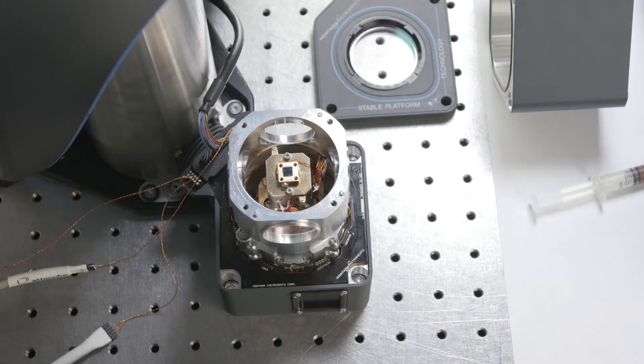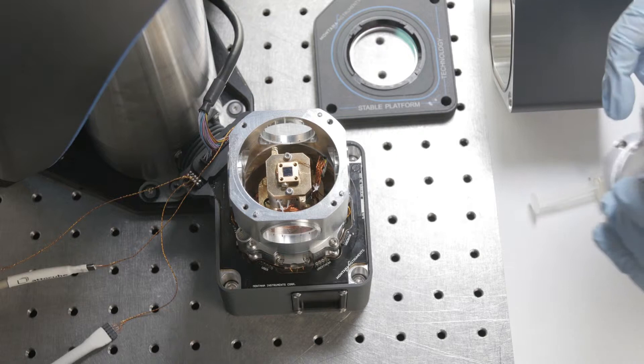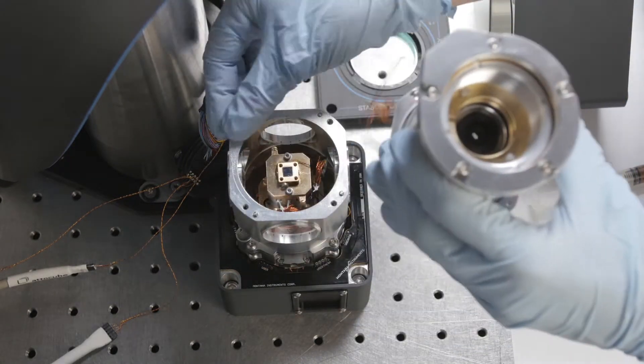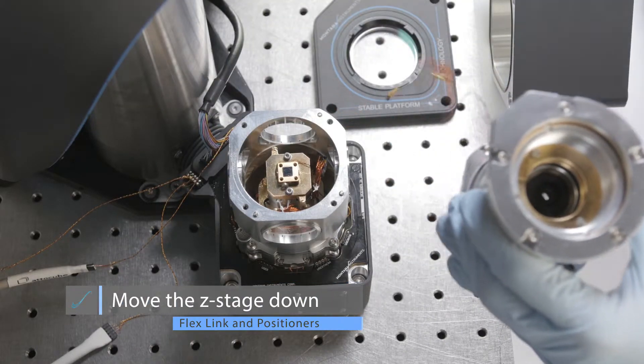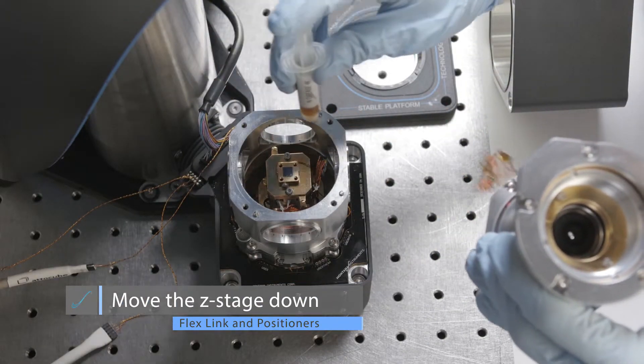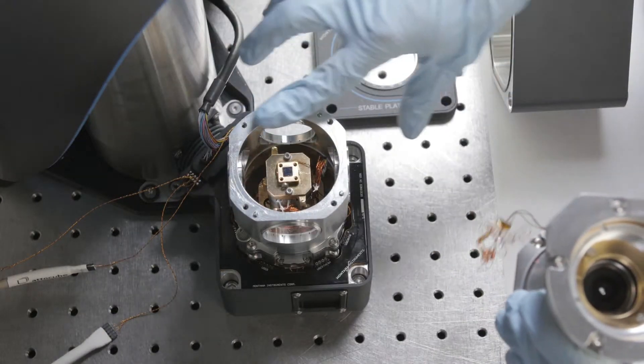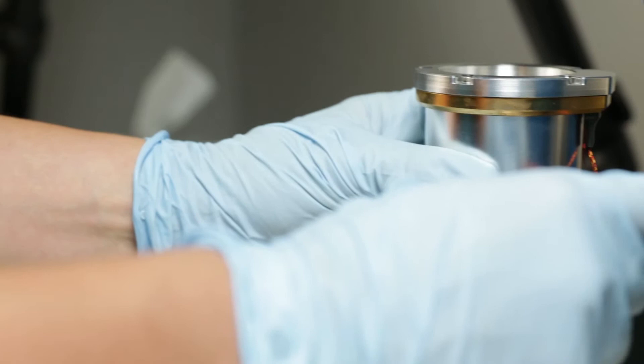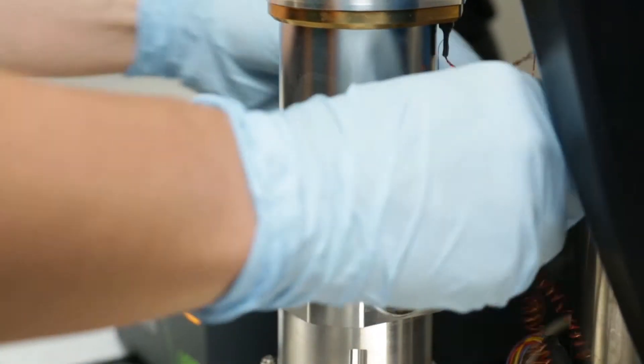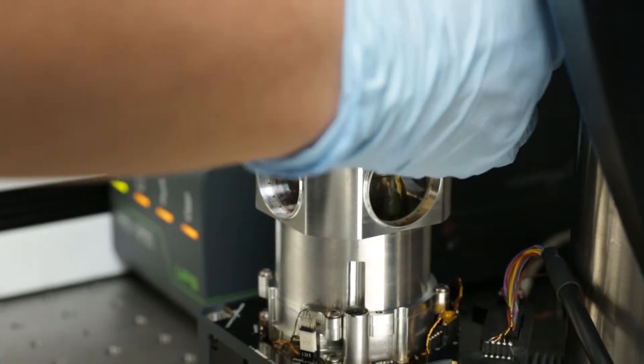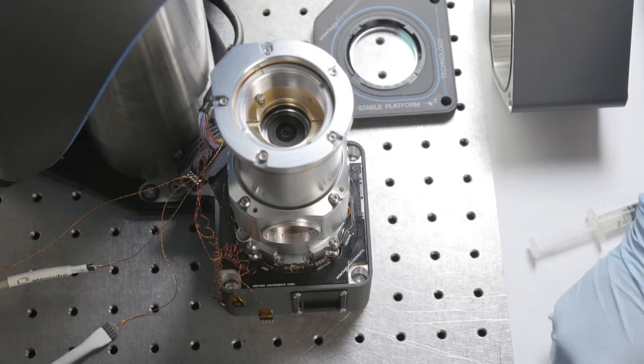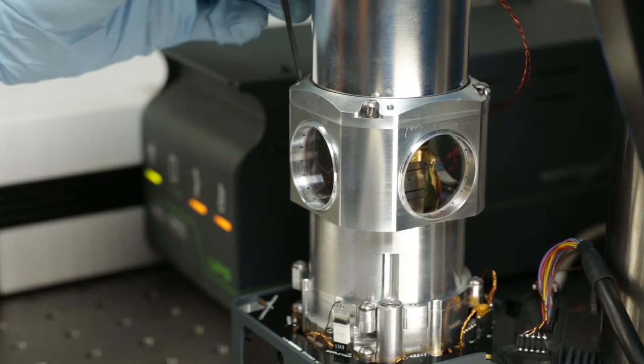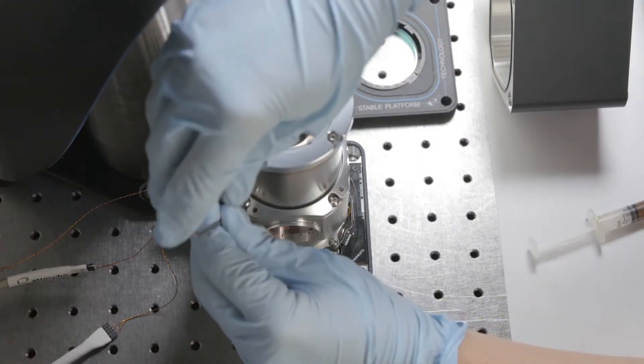Finally, we'll put on the cryo-optic holder. Make sure your Z stage is all the way down so you don't run the aperture into your sample. We'll also want to add a thin layer of N-grease. We'll tighten these screws down, also M3 by 8 cap screws with Belleville washers.